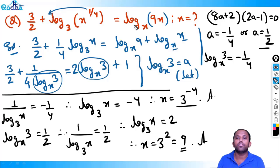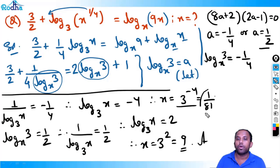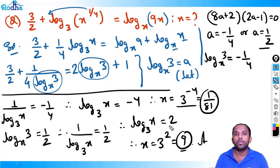Since we did not square or expand the equation, there are no extraneous roots to check. Both solutions are valid. So x equals 1/81 and x equals 9. These are good algebra questions to practice — solving 5 to 6 steps like this in log will help you a lot. We'll continue in the next video.